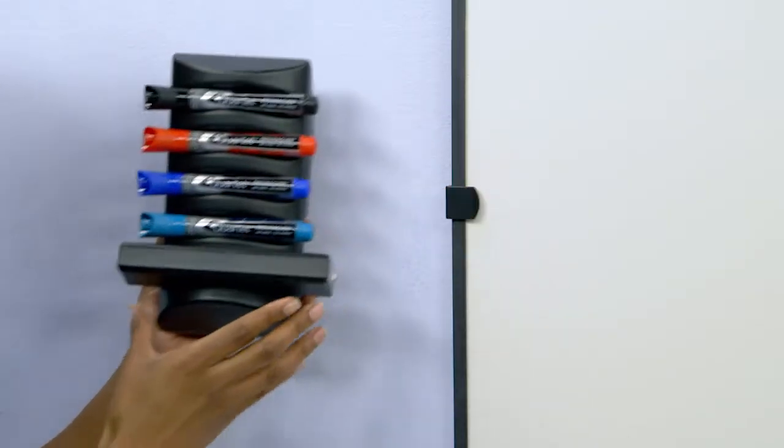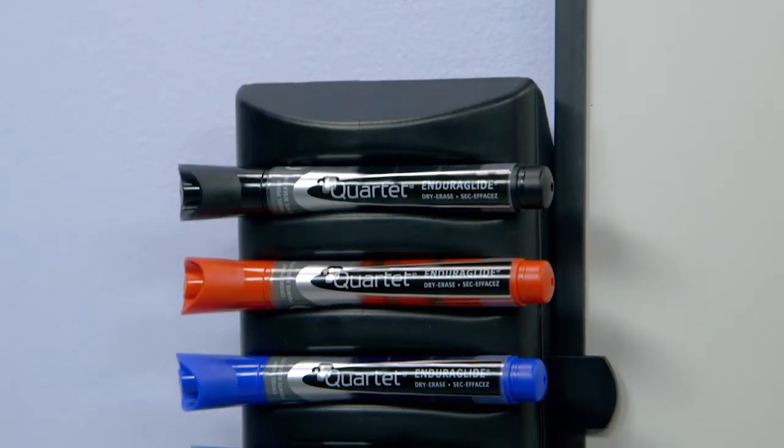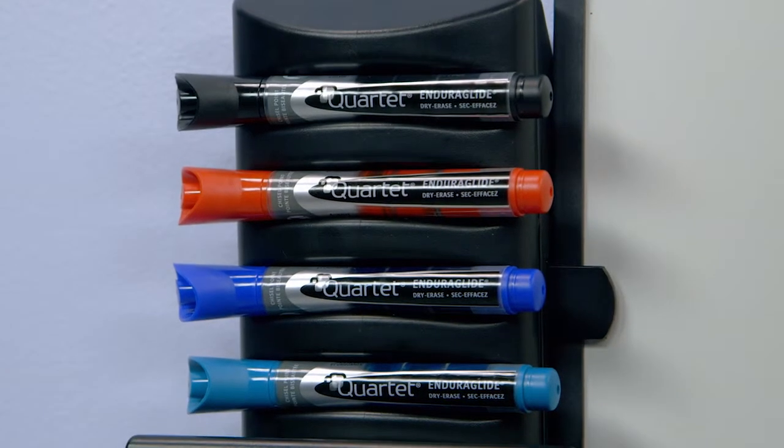The Caddy comes pre-packed with four chisel tip assorted color EnduraGlide dry erase markers that have built-in ink gauges to show you when ink is running low.